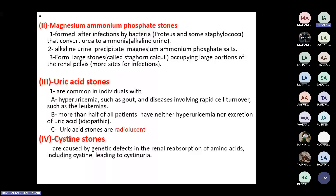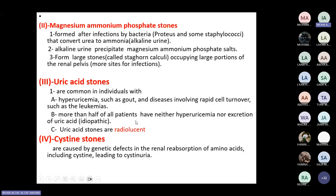Uric acid stones are usually seen in patients with hyperuricemia, such as gout patients, or patients with tumors with rapid cell turnover such as leukemia. Sometimes they are idiopathic. Importantly, all kidney stones can be diagnosed with radiological examination except uric acid stones, which are radiolucent and cannot be seen on X-ray.